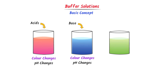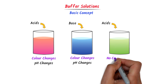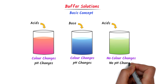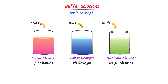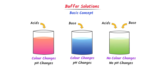Thirdly, consider an unknown solution in this beaker. Now I add few drops of acid to this solution. We can see that the color doesn't change. Thus we say that no color change means no pH change. Then I add few drops of base to this solution. Again we can see that color doesn't change. Thus we say that no color change means no pH change.